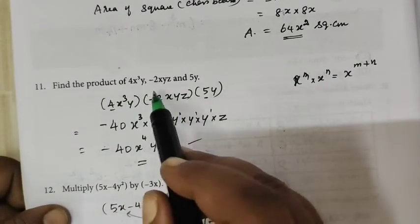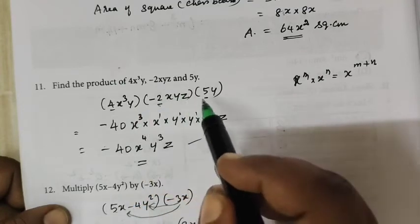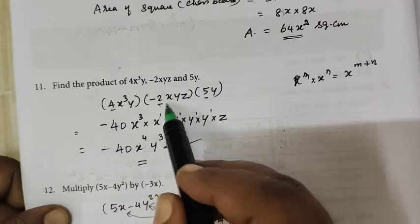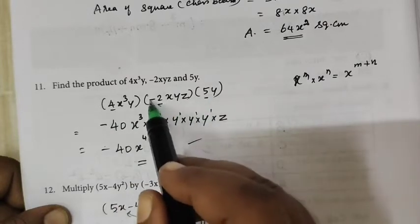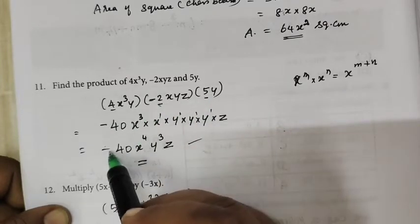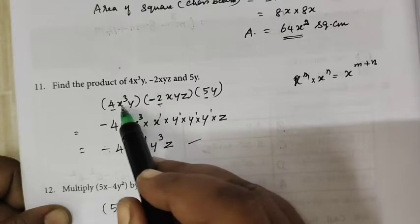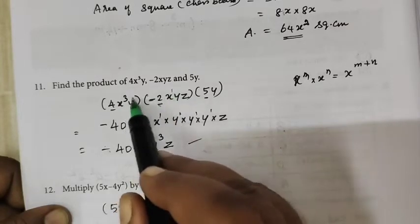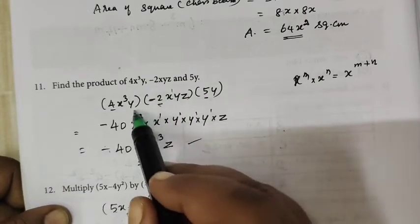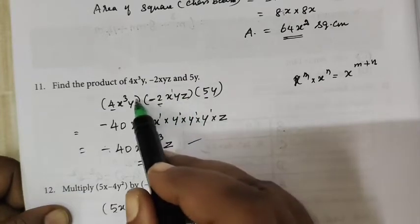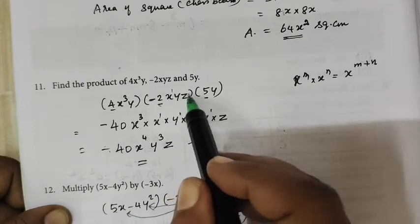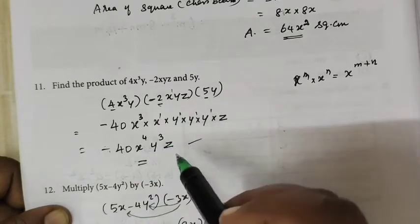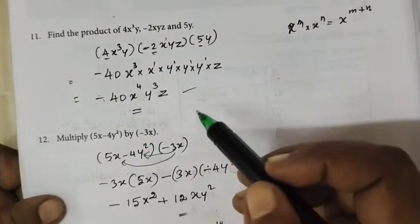Question number 11: Find the product. This is a simple question — just find the product. 4 times 2 is 8, then 8 times 5 is 40. There is one minus, so the answer is minus. Adding the powers of x: power is 3 plus 1 equals 4. For y: the powers add up to give y squared.